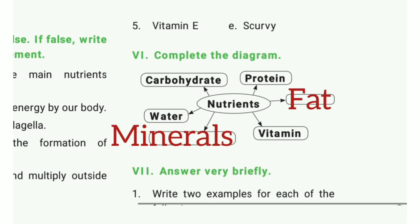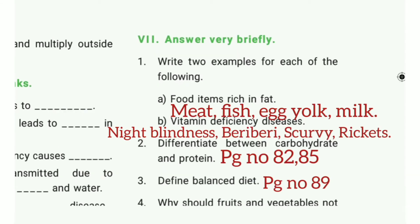Complete the diagram. The answer is fat and minerals. Answer very brief. First one: write two examples for each of the following. Food items rich in fat — the answer is meat, fish, egg yolk, and milk.